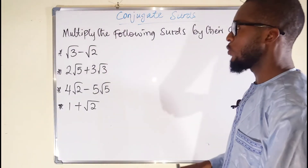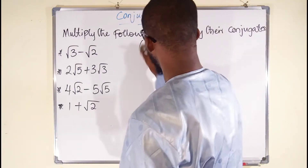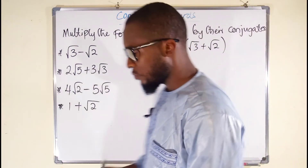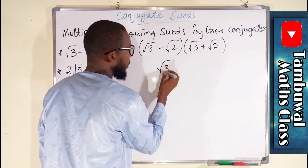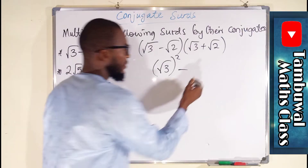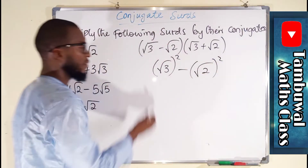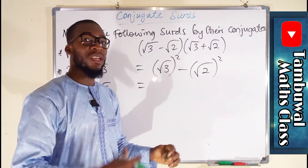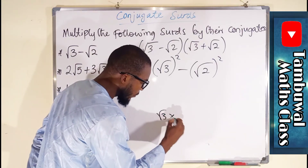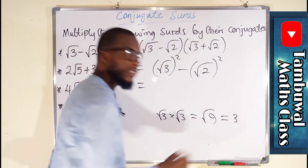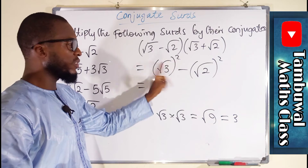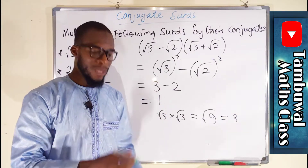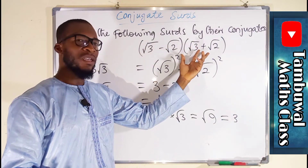Let's start with the first one: √3 minus √2. The conjugate of this is √3 plus √2. Using difference of two squares, we take the first term squared minus the second term squared: (√3)² minus (√2)². √3 squared is 3 and √2 squared is 2, so we have 3 minus 2, which equals 1. And 1 is a rational number — by multiplying this surd by its conjugate the result is rational.